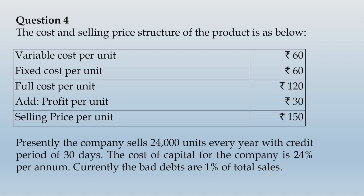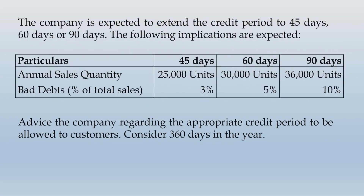Presently, the company sells 24,000 units every year with a credit period of 30 days. The cost of capital for the company is 24% per annum. Currently, bad debts are 1% of total sales. The company is expected to extend the credit period to 45 days, 60 days, or 90 days, and the following implications are expected. Annual sales quantity and bad debts as a percentage of total sales are given for all three proposals. Consider 360 days in the year.